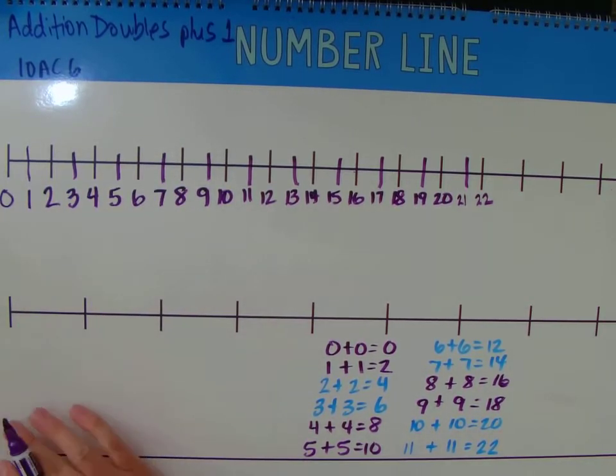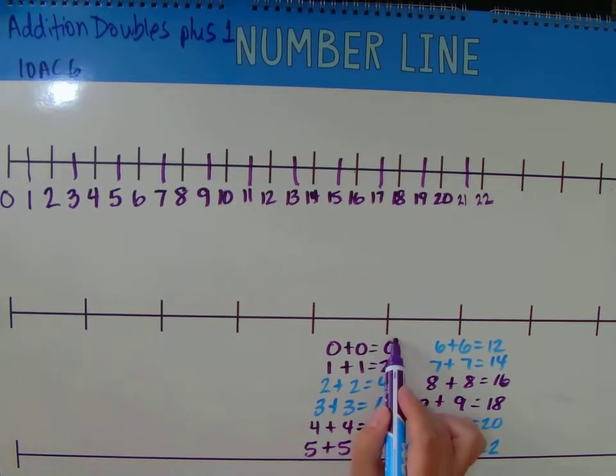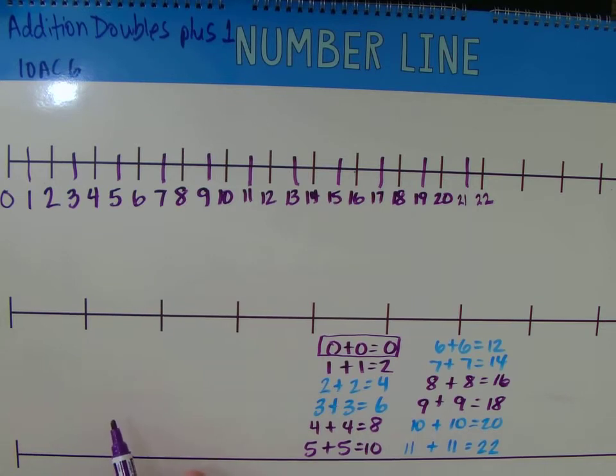When we are doing addition doubles plus 1, it means that we're going to do our regular addition double, but we're going to add one more.